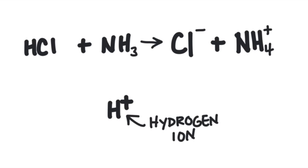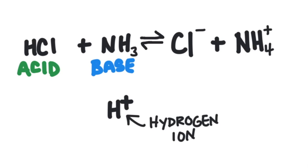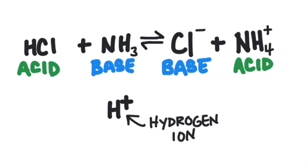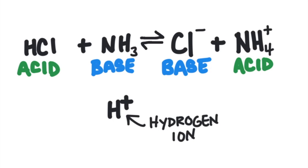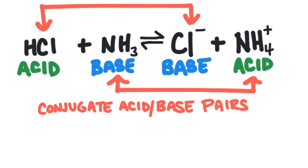These types of acid-base reactions are interesting because they are reversible — they can go in both directions, which is why we use reversible arrows. When going to the right, HCl is the acid and NH₃ is the base. When going to the left, NH₄⁺ is the acid and chloride is the base. So the acid becomes the base and the base becomes the acid. These are called conjugate acid-base pairs: pairs of compounds on opposite sides of a chemical equation that differ by a single hydrogen ion.